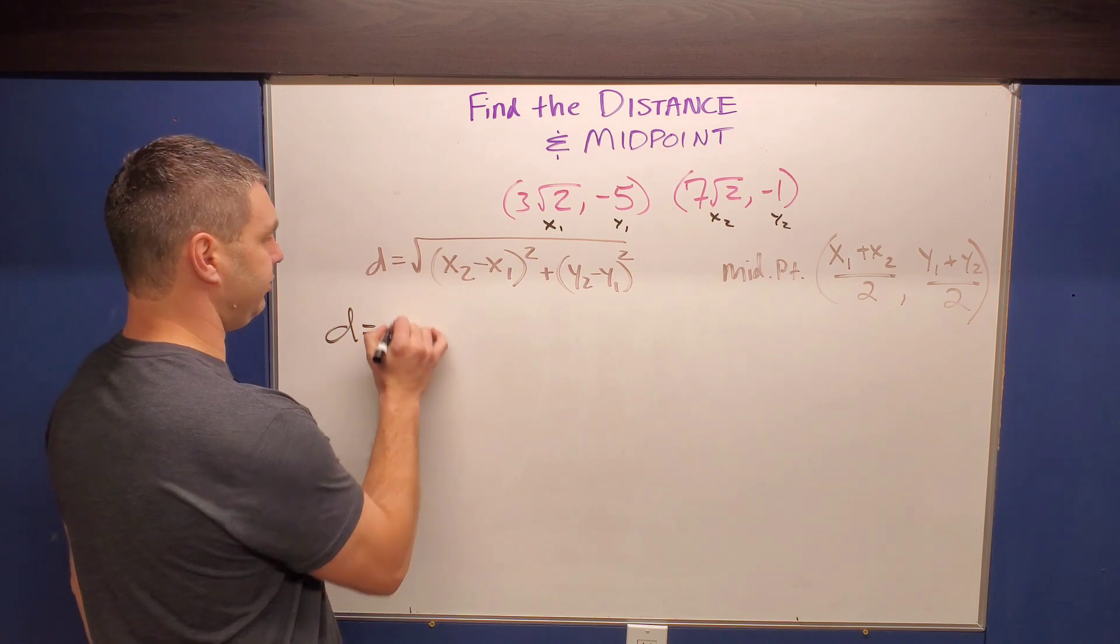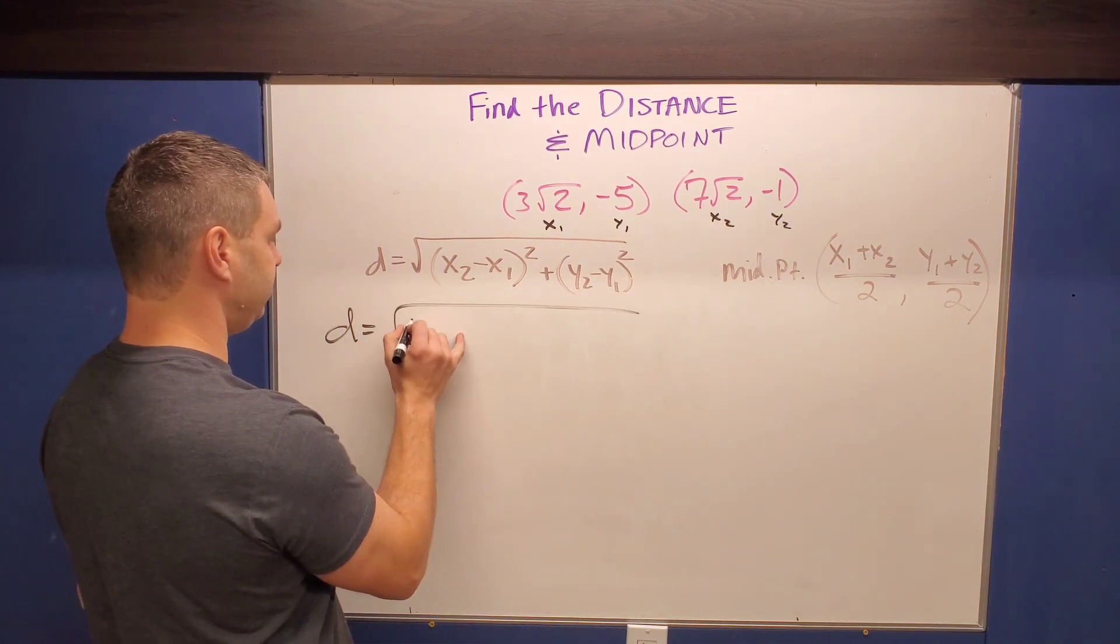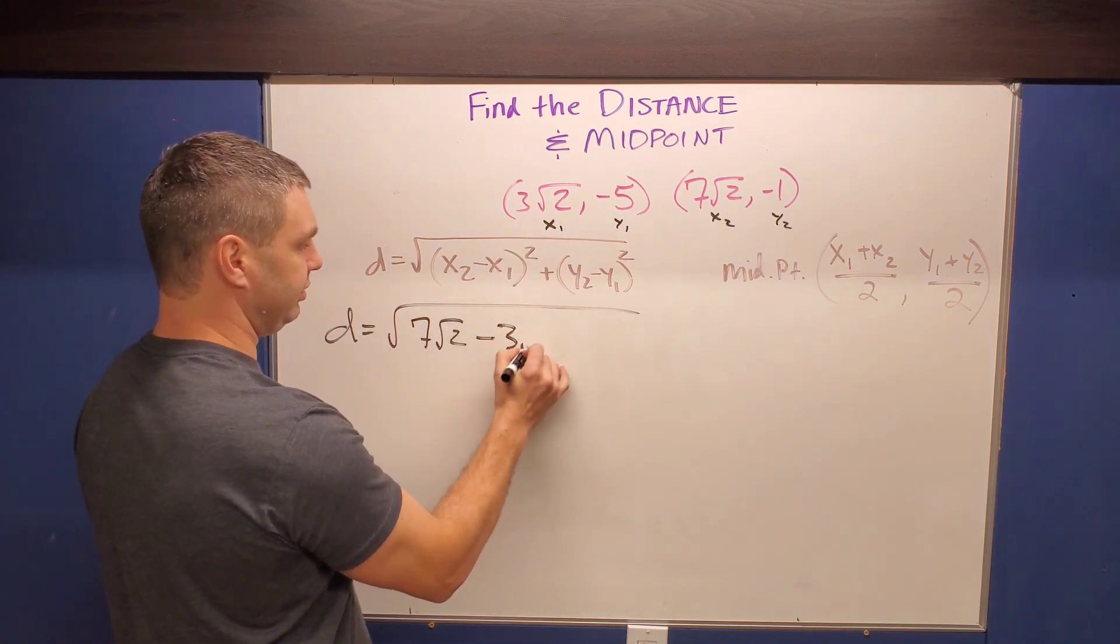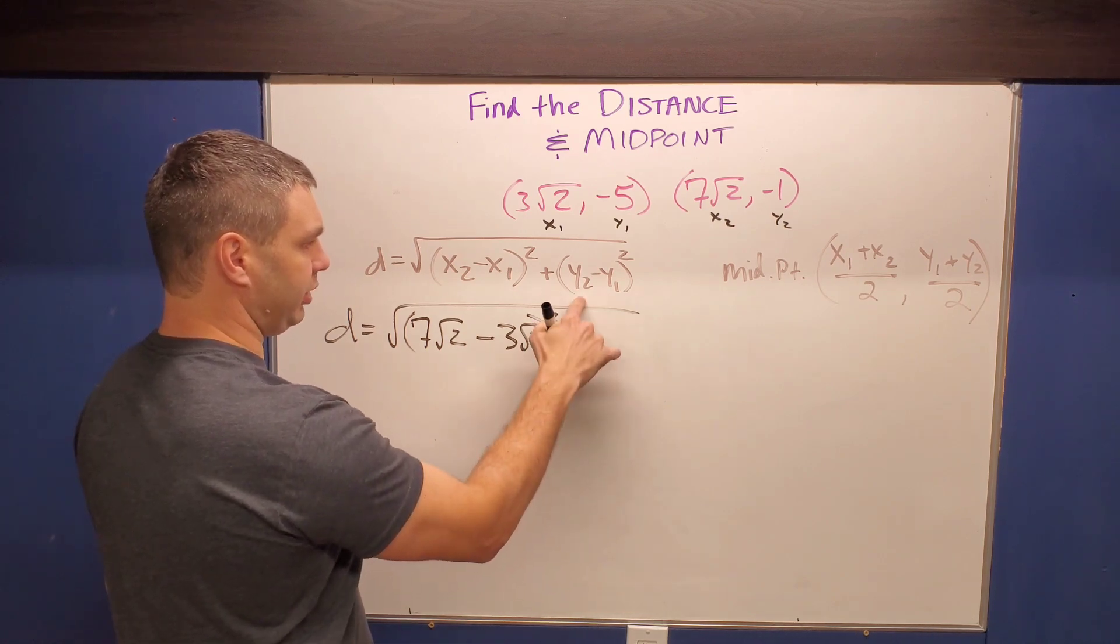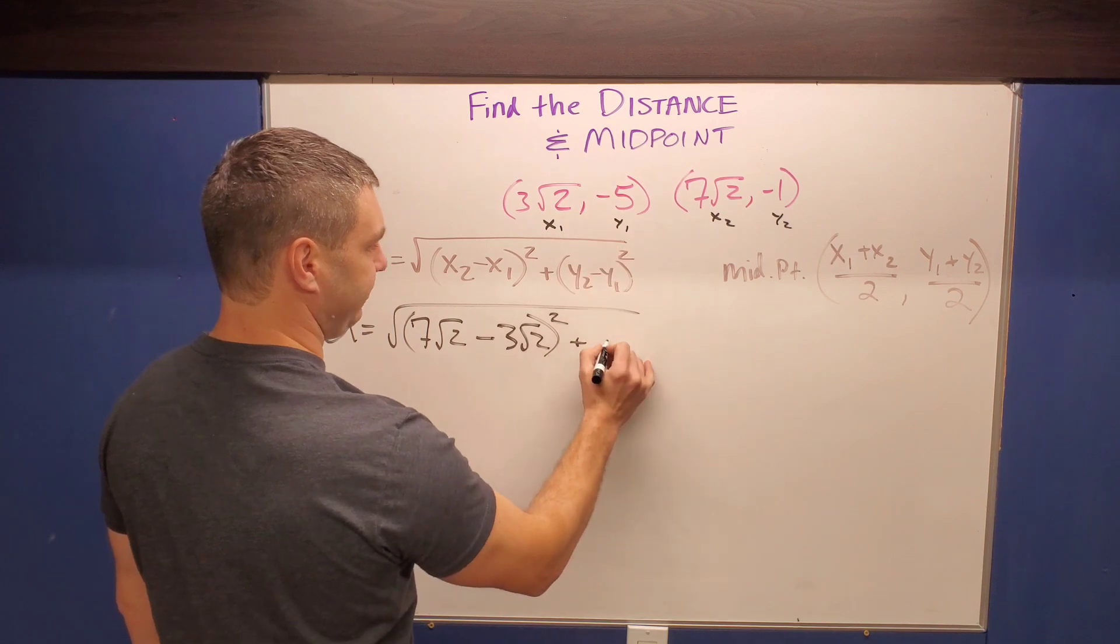So for example, this is gonna be d equals the square root of my x2, which is seven square roots of two, minus the x1 is three square roots of two. That's all gonna be squared plus y2 minus y1, negative one minus a negative five.